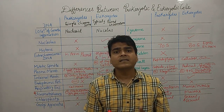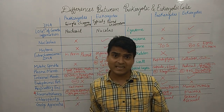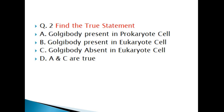Now it's time for the question round. Question 1: Find the true statement. A) Histone present in prokaryote cell, B) Histone present in eukaryote cell, C) Histone absent in eukaryote cell, D) A and C are true. Question 2: Find the true statement. A) Golgi body present in prokaryote cell, B) Golgi body present in eukaryote cell, C) Golgi body absent in eukaryote cell, D) A and C are true.